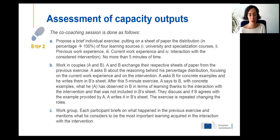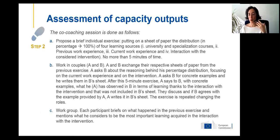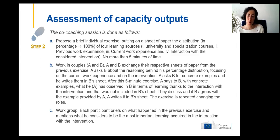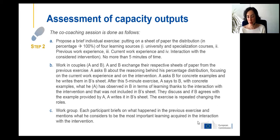After this quick five-minute exercise, A says to B — with concrete examples — what A thinks have been the main learnings observed in B thanks to the interaction with the intervention that were not part of B's paper. If B agrees, these additional capacities are added on paper. Then in a group, each participant briefs on what happened in the exercise and mentions the most important learnings acquired through interaction with the intervention. Then roles are reversed — B asks A, and so on. This co-coaching may seem complicated but was actually very easy, and was a very stimulating exercise for participants.